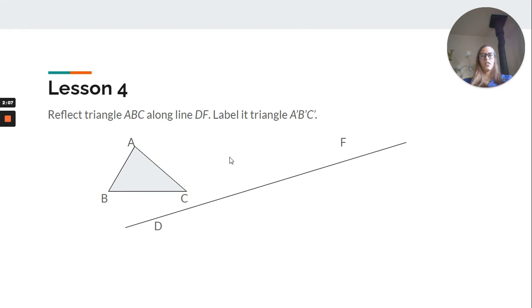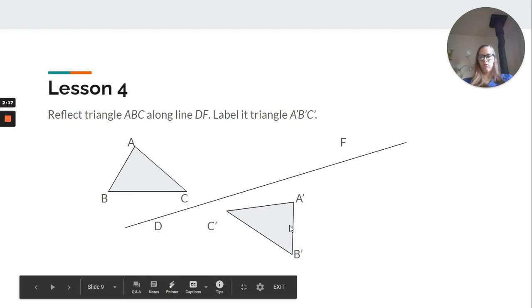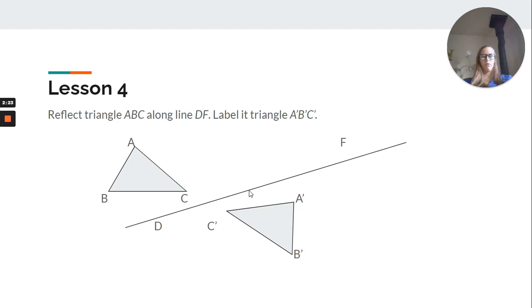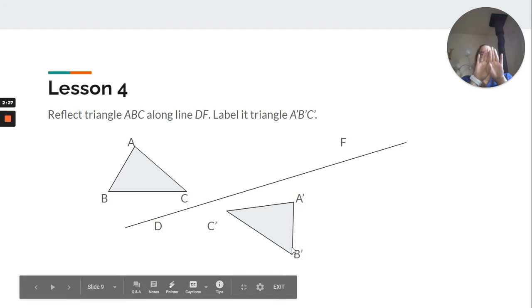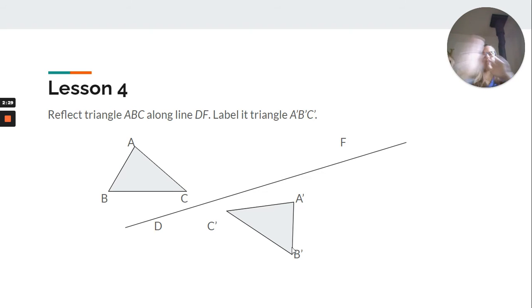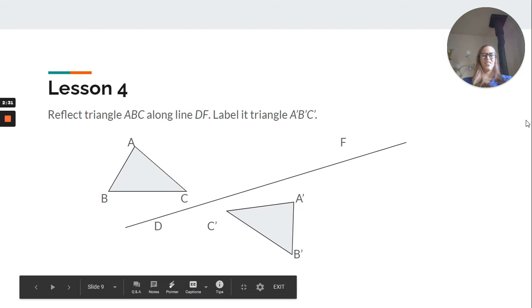Lesson 4, we looked at reflections. So, it says reflect triangle ABC along DF. So, it would be across DF, excuse me. Then label it triangle ABC. Here, we reflected it. Remember, the point that was the closest, or if it's multiple, like with a square or rectangle, then those points are always basically just, like you think of it as a mirror image. If you folded it in half, everything would fold onto each other.